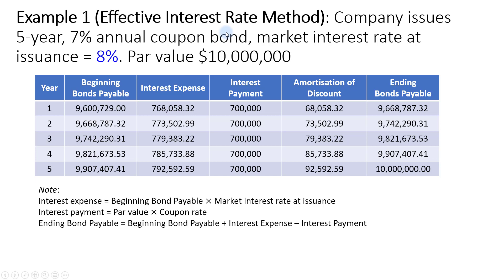For US GAAP, an alternative is the straight line method, but it prefers using the effective interest rate method. Now let's look at the calculation of the carrying amount or carrying value of the bond, which is recorded in the balance sheet, and the interest expense, which is recognized in the income statement, and the interest payment will be recognized in the cash flow statement. We also have the amortization of discount and premium.